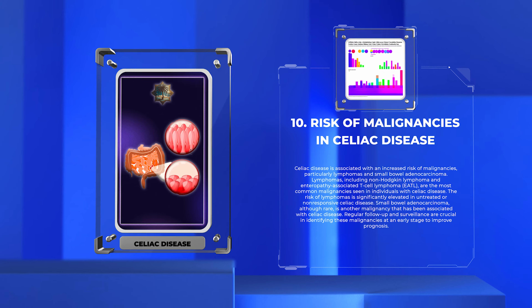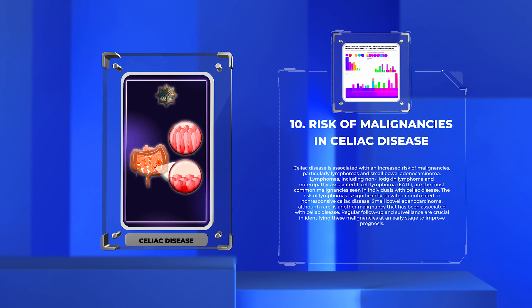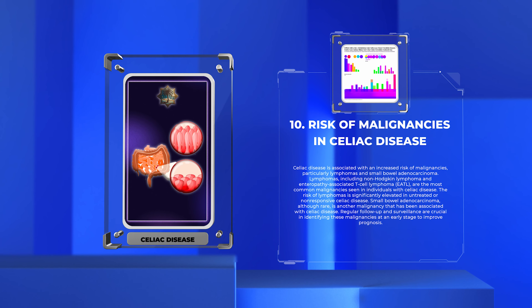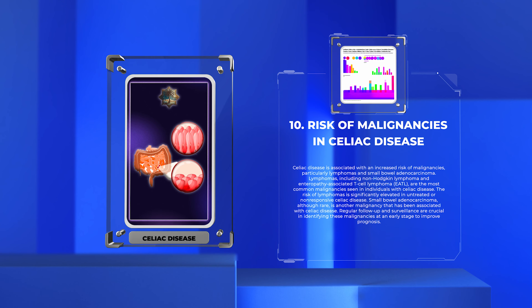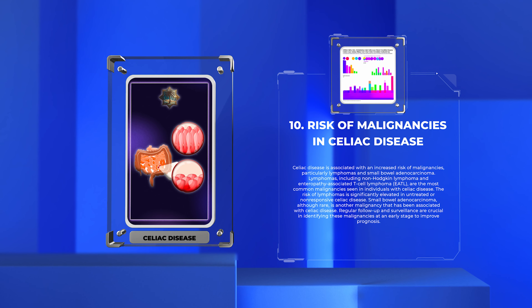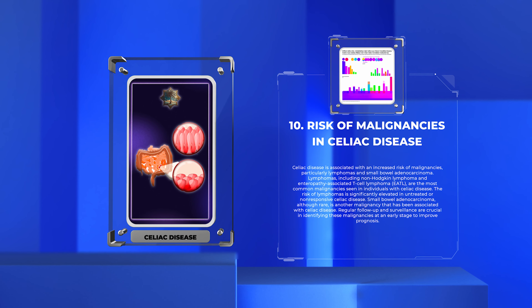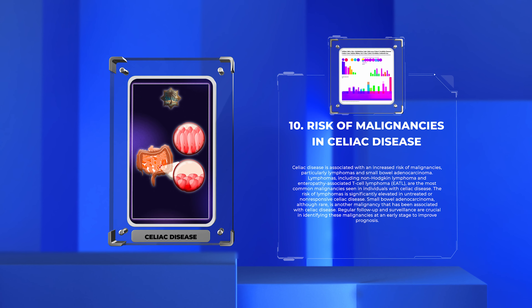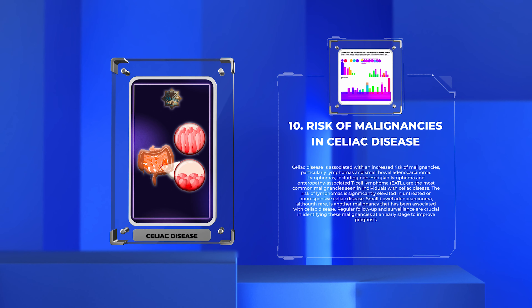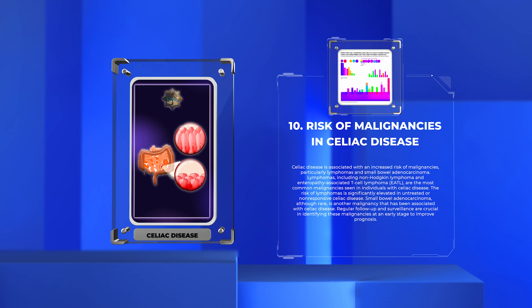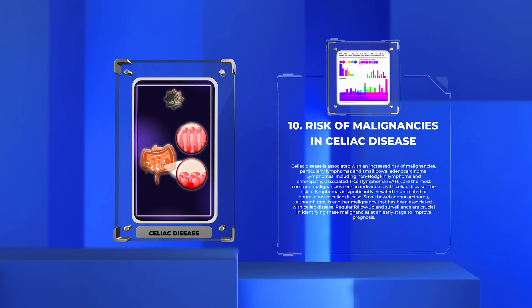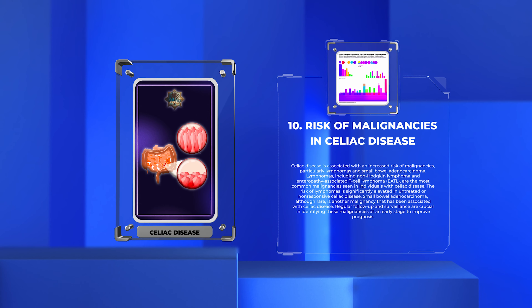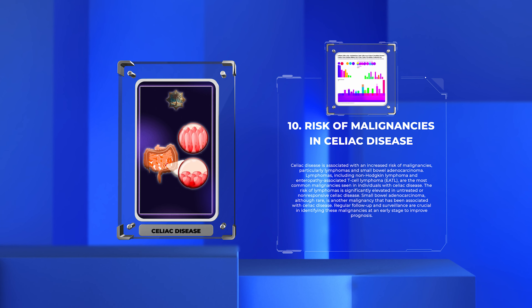Celiac disease is associated with an increased risk of malignancies, particularly lymphomas and small bowel adenocarcinoma. Lymphomas, including non-Hodgkin lymphoma and enteropathy-associated T-cell lymphoma (EATL), are the most common malignancies seen in individuals with celiac disease. The risk of lymphomas is significantly elevated in untreated or non-responsive celiac disease.